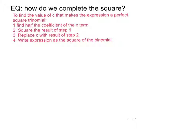We're going to look at how to complete the square. To find the value of C that makes the expression a perfect square trinomial, we first find half the coefficient of the x term, square the result, replace C with that result, and write the expression as the square of a binomial. That doesn't make much sense without an example, so let's look at one.